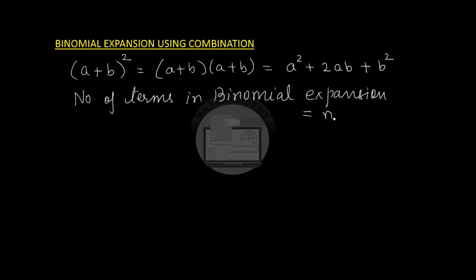If n is the highest power then there are n plus 1 terms. Now let us look at the coefficient of each term in the expansion. The coefficient of a² is 1, the coefficient of ab is 2, and the coefficient of b² is 1. Here n, the power to which the binomial is raised, is 2.